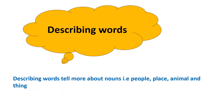Now, what are describing words? Describing words tell more about nouns. What is a noun? A noun is the name of a person, place, animal, or thing. So describing words tell more about people, places, animals, and things. Describing words are also known as adjectives, which are used to tell about the quality of a noun.